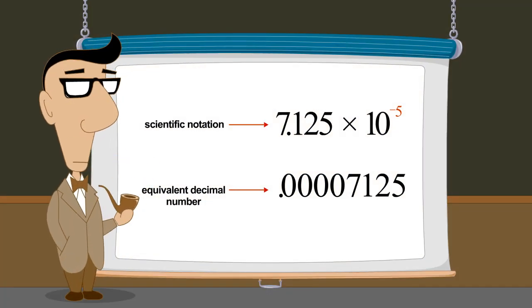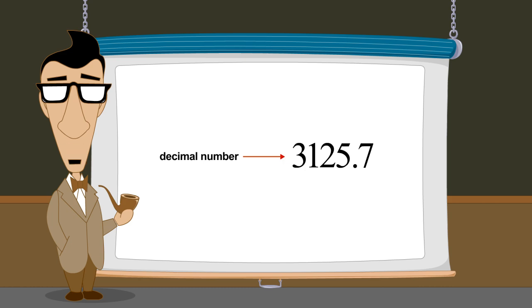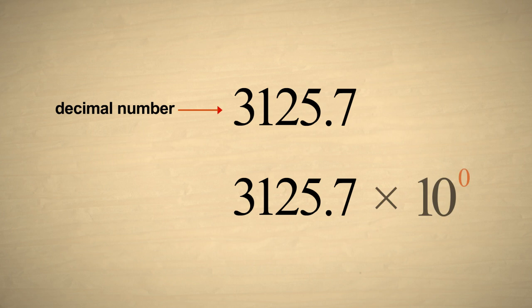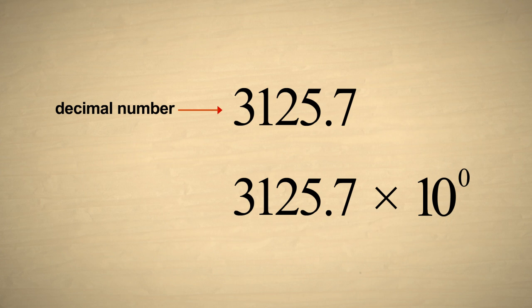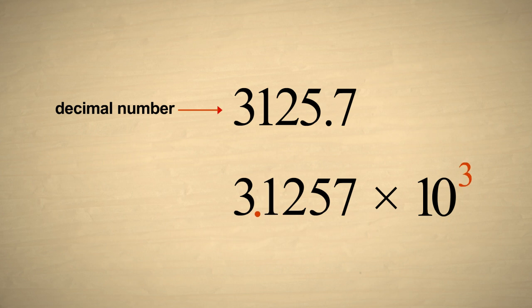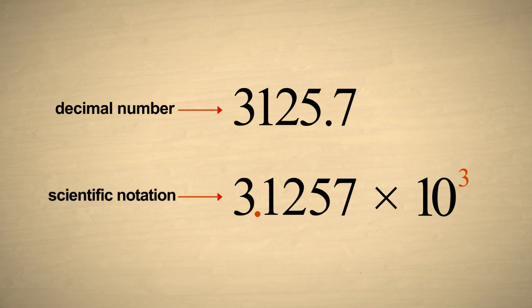Now that we have seen how to convert a number written in scientific notation to a standard decimal number, let's convert a decimal number into scientific notation. We'll start by adding a multiplier of ten to the zero power. This is the same as multiplying by one, so the value of the number is unchanged. For a number to be written in scientific notation, the decimal point must be positioned immediately after the first non-zero digit of the number. In this example, we will need to move the decimal point three columns to the left. For each column we move the decimal point, we must increase the exponent of the multiplier to compensate for the fact that we have decreased the value of the number by one-tenth. The number's value is unchanged, and it is now written in scientific notation.